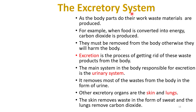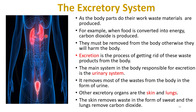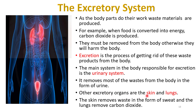Now let's discuss the excretory system. As the body parts do their work, waste materials are produced. For example, when food is converted into energy, carbon dioxide is produced. These waste materials must be removed from the body, otherwise they will harm it. Excretion is the process of getting rid of these waste products from the body. The main system in the body responsible for excretion is the urinary system, which removes most of the waste from the body in the form of urine. Other excretory organs are the skin and the lungs.